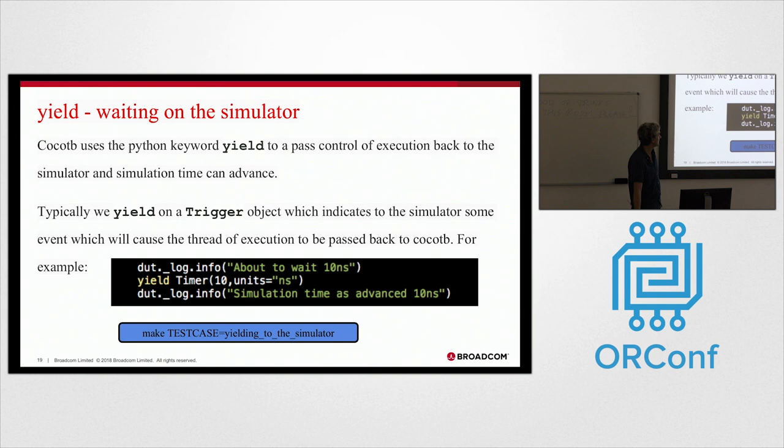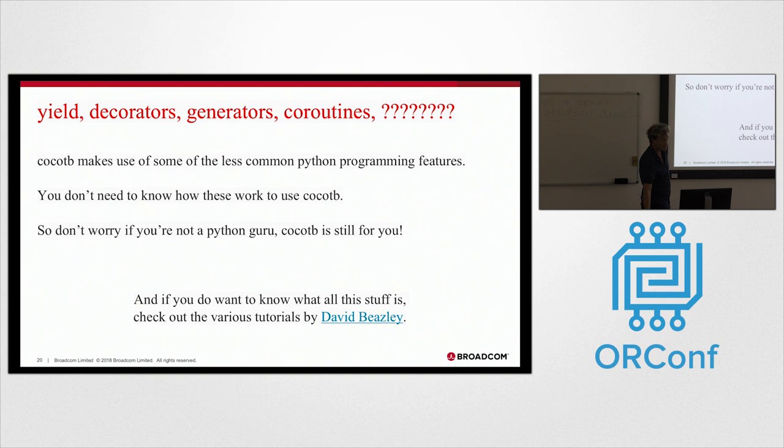Okay, so that's good. We can read and write signals inside the simulator. What next? So we yield. I don't know, lots of people who've just had a brief encounter with Python might not know what this is. My view is you don't really need to know. But this is the way you pass control back to the simulator. You yield on what's called a trigger in Cocoa TB. So for this example, you're yielding here on a timer of 10 nanoseconds. So this will go off to the simulator, run 10 nanoseconds, come back, and you'll keep going. This is the part where RTL designers get scared. So yield, decorators, generators, coroutines - what is all this stuff. The good news is you kind of don't really have to know. If you're not a Python guru, CocoTB is still for you. And if you do want to know, Dave Beasley has some awesome tutorials. Go and check them out.